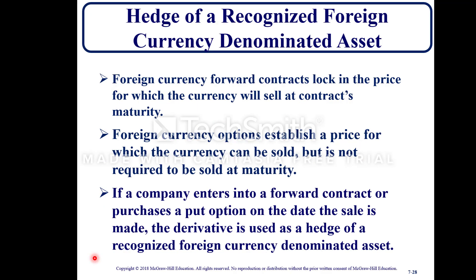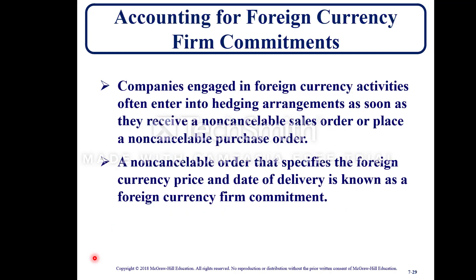Foreign currency forward contracts lock in the price at which the currency will be sold at the contract's maturity. Foreign currency options establish a price at which currency can be sold but do not require the sale at maturity. If a company enters into a forward contract or purchases a put option on the date of sale, the derivative is used as a hedge of a recognized foreign currency denominated asset.